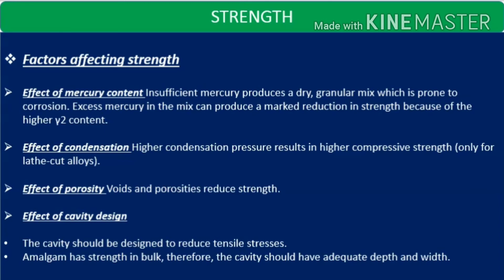Effect of condensation: higher condensation pressure results in high compressive strength, but that is valid for lathe-cut alloys. Porosity: voids and porosities reduce strength. Effect of cavity design: if it is not a butt joint, the tooth and amalgam interface will break apart. The cavity should be designed to reduce tensile stresses — the resistance form and retention form should be followed. Amalgam has strength in bulk, so the cavity should have adequate depth and adequate width.